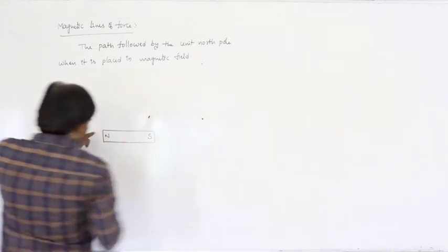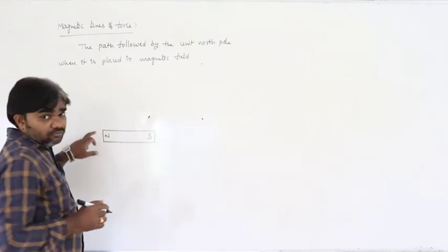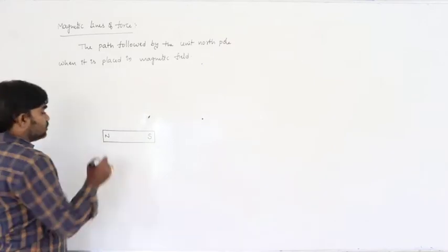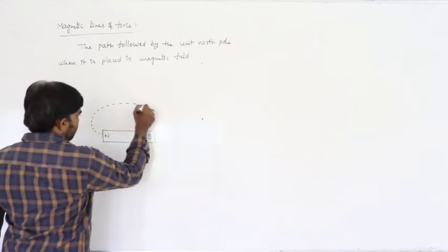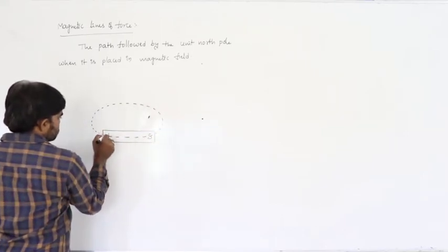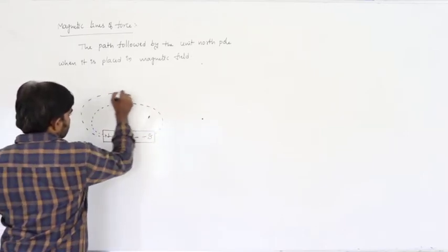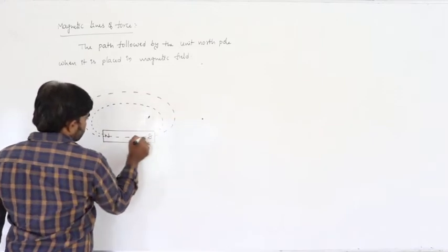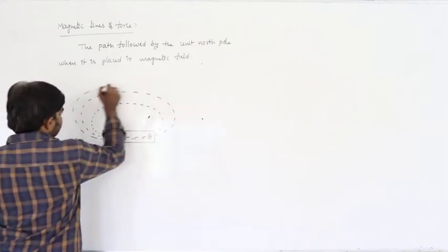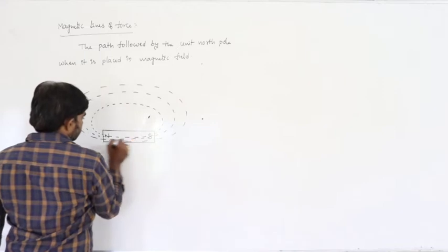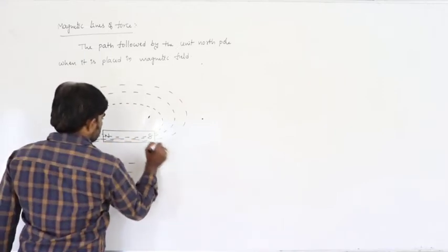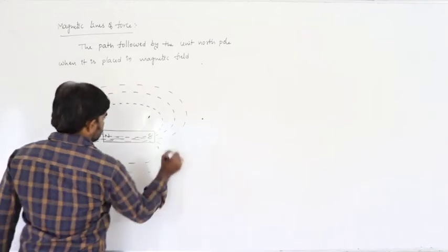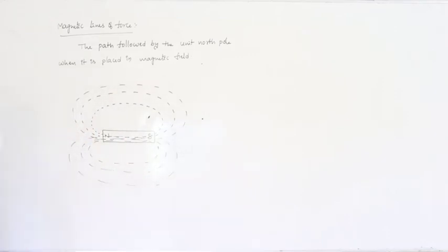If you place the magnetic needle near the magnet, the path followed by the magnetic needle traces the magnetic lines of force. Outside the magnet, the direction of magnetic lines of force is from north to south.